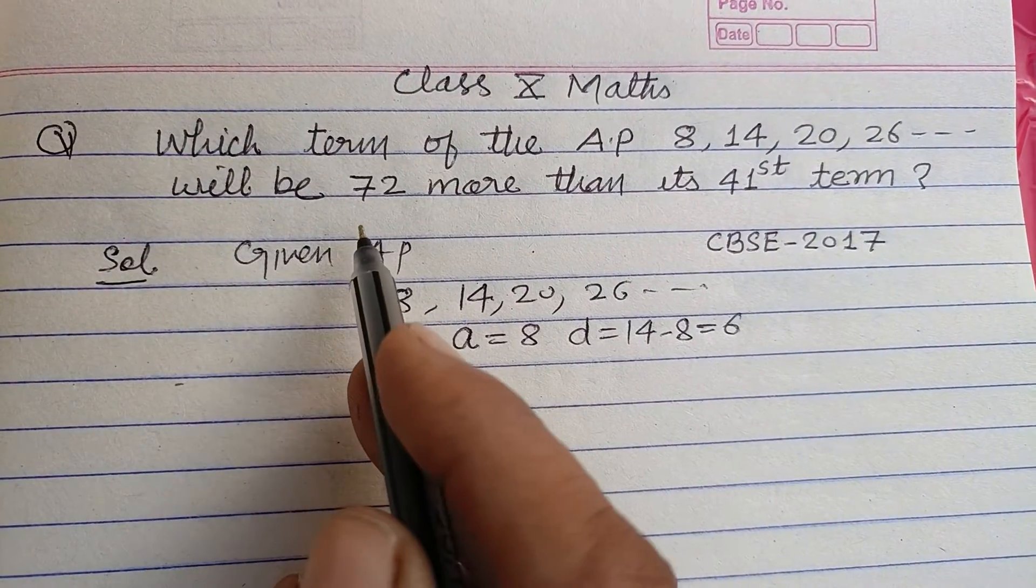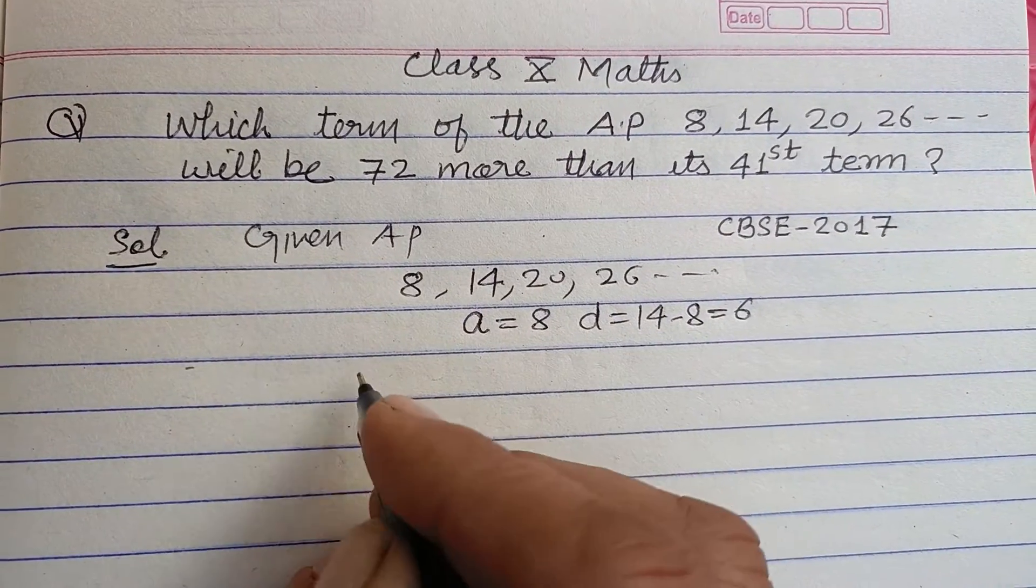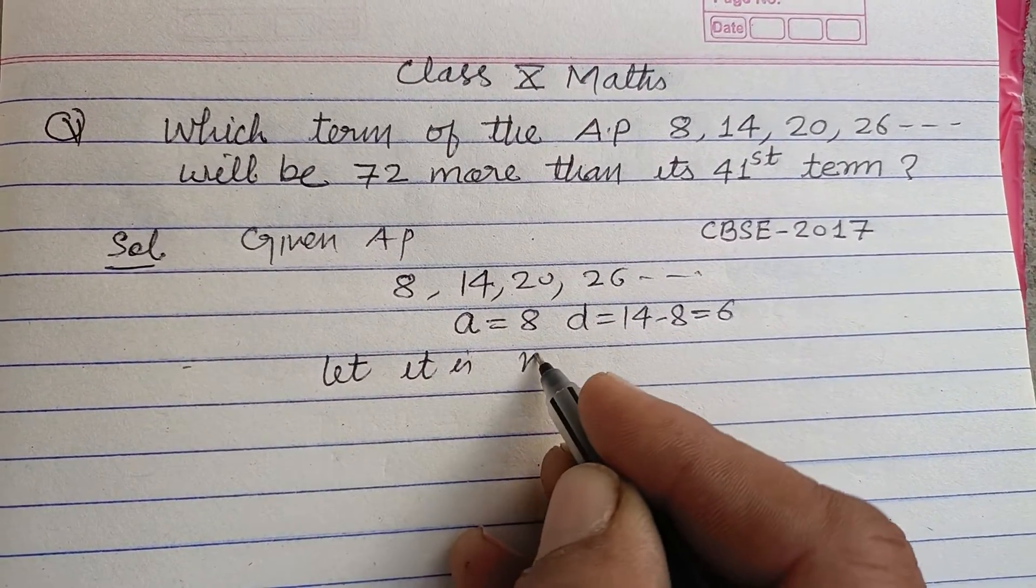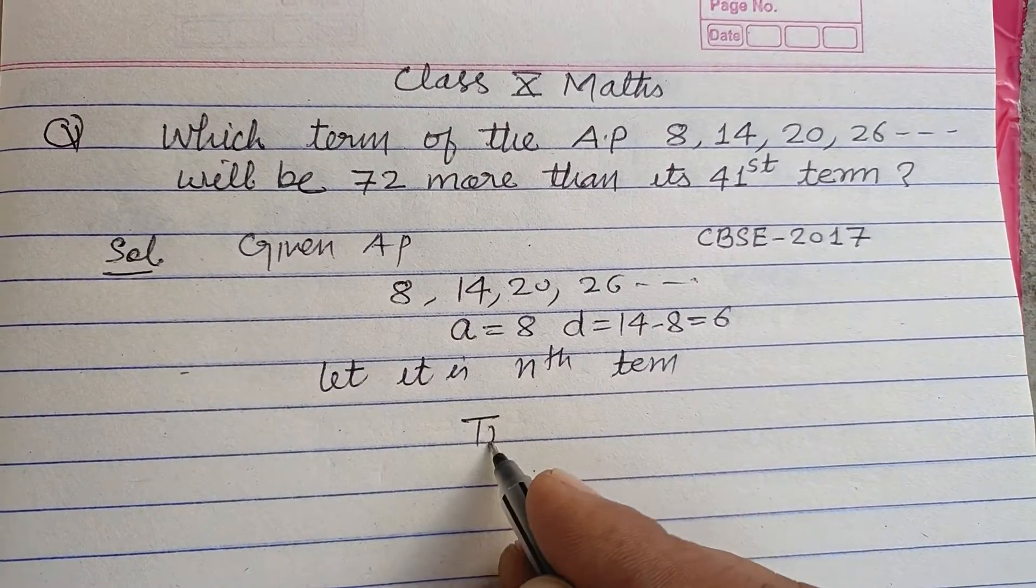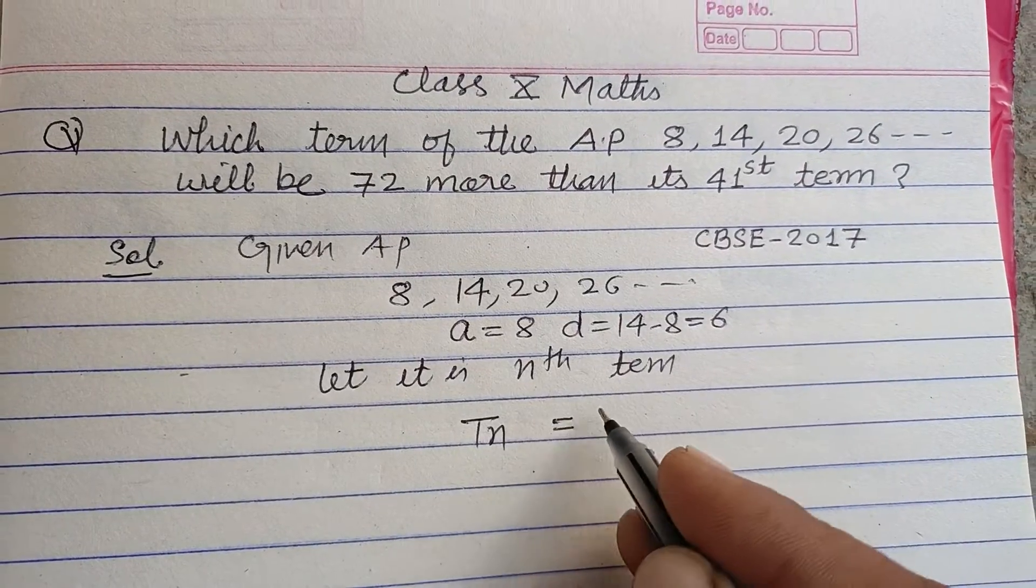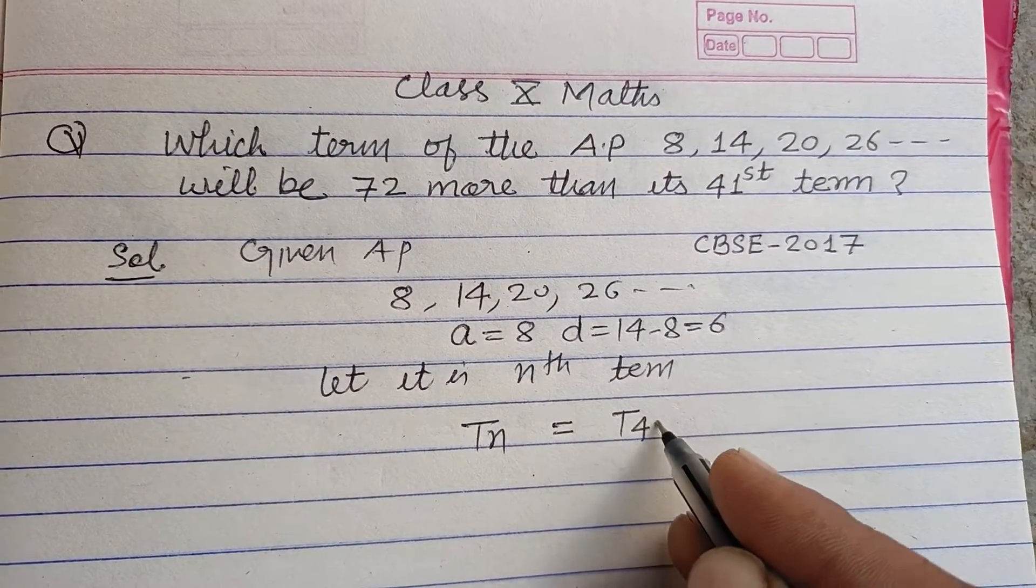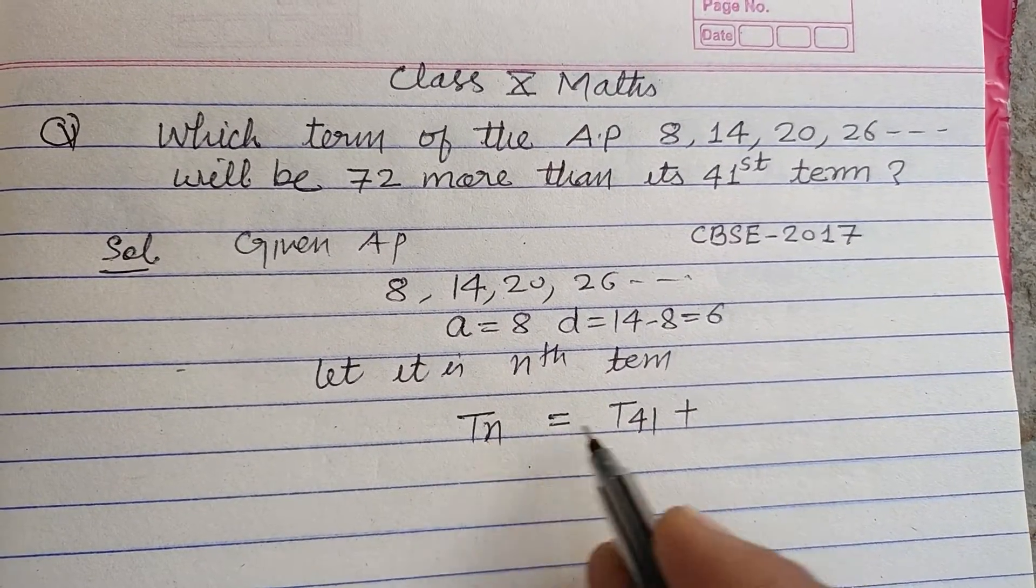The question is asking which term is 72 more than the 41st term. So let it be the nth term. Tn is 72 more than T41, so we add 72 to the 41st term.